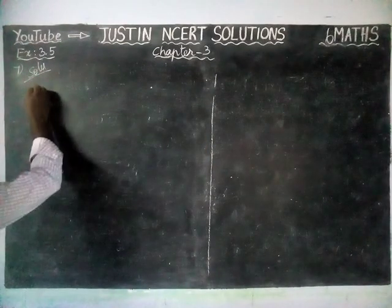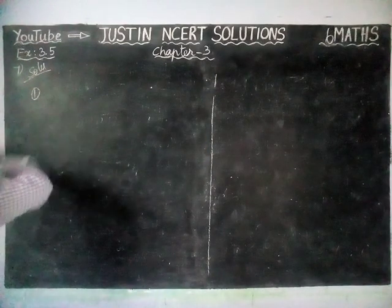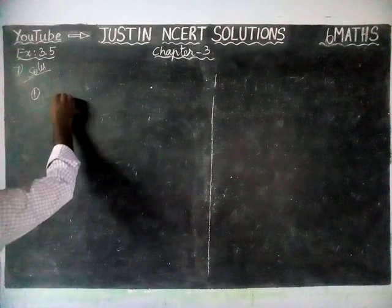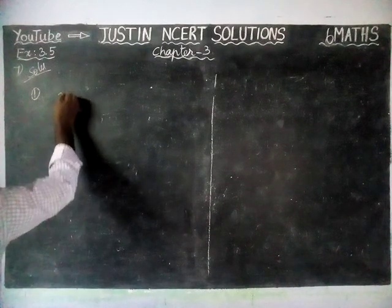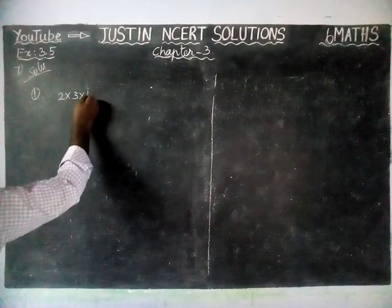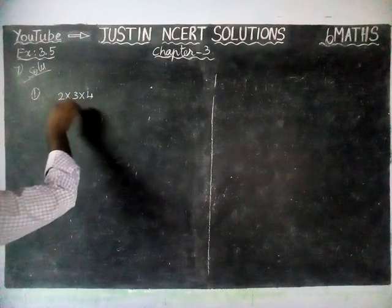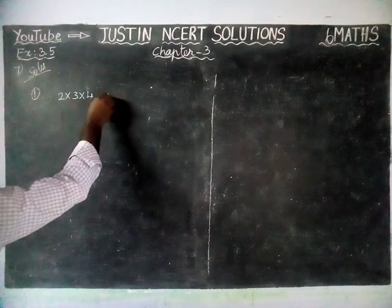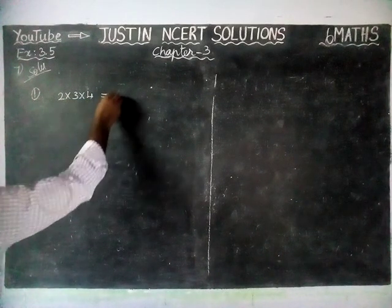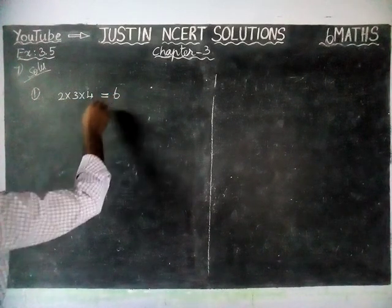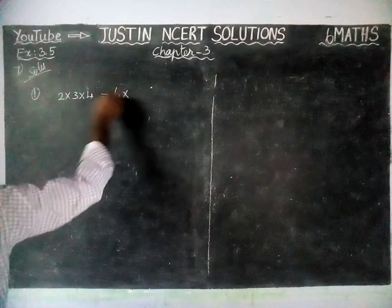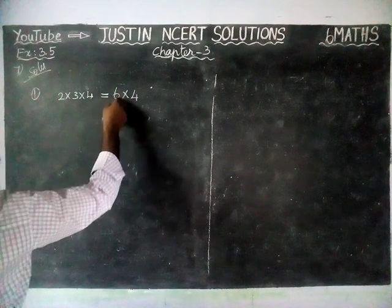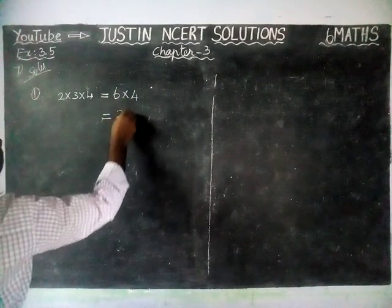We are going to take the first example, starting with number 2. 2 into 3 into 4 — 3 consecutive numbers. We are going to find the product. 2 threes are 6, into 4 is equal to 24.